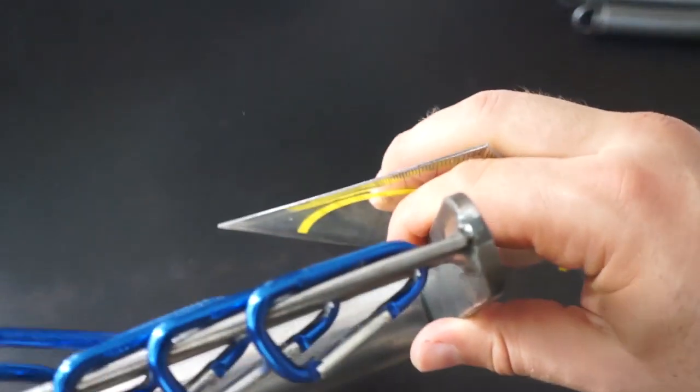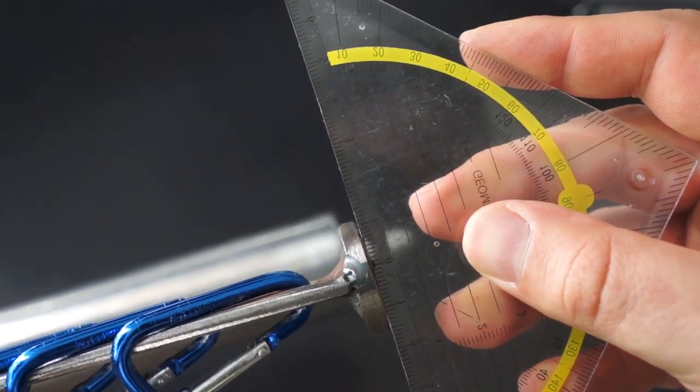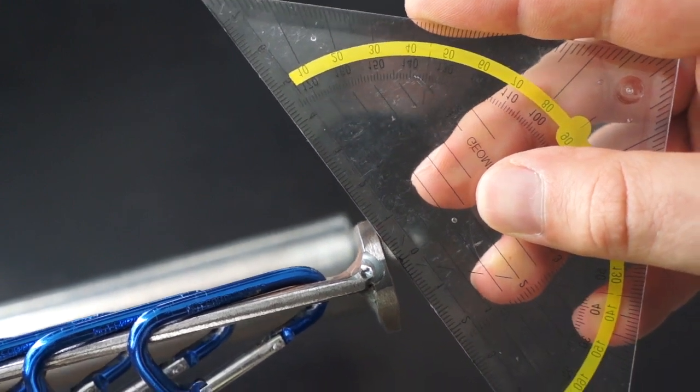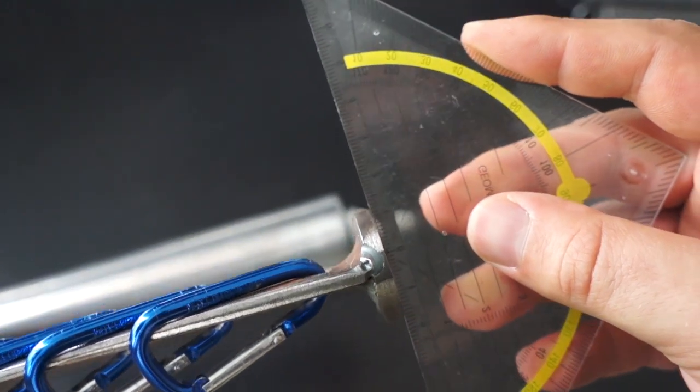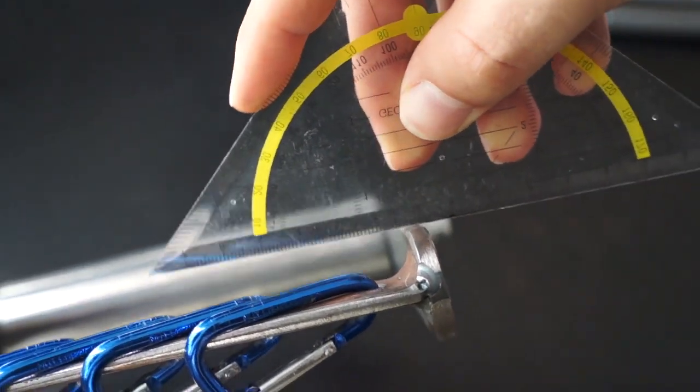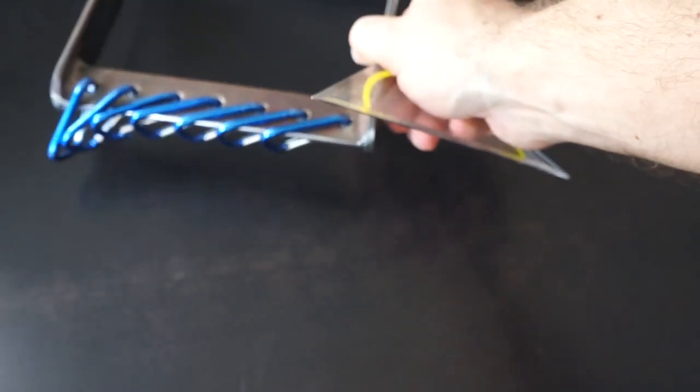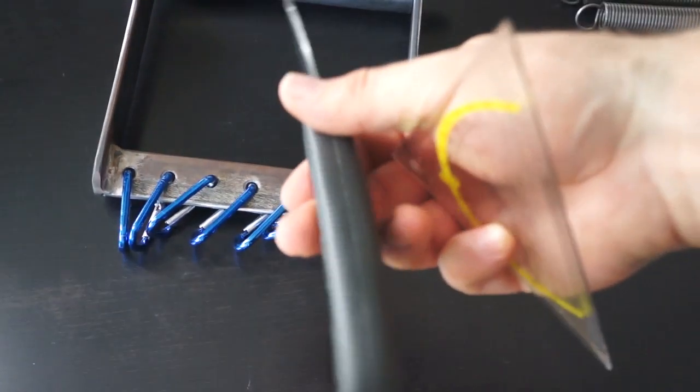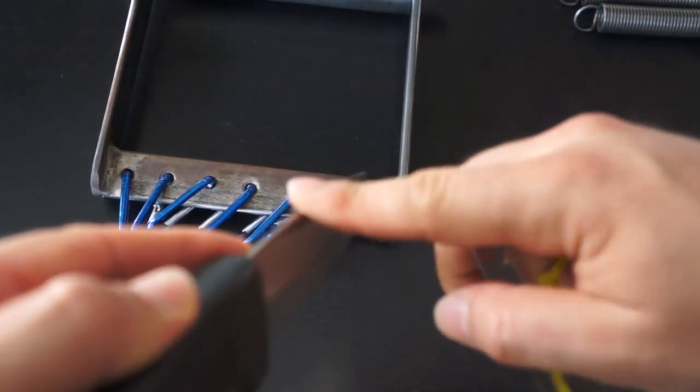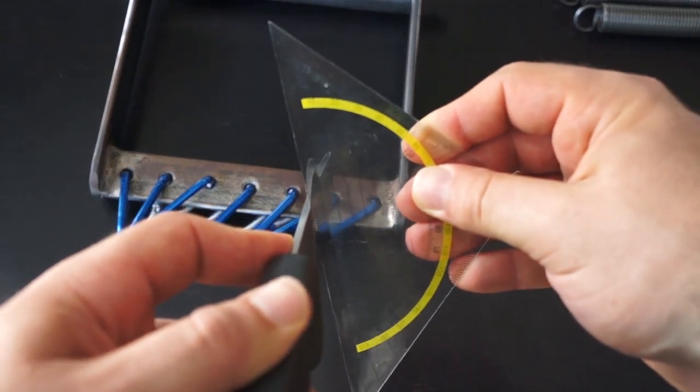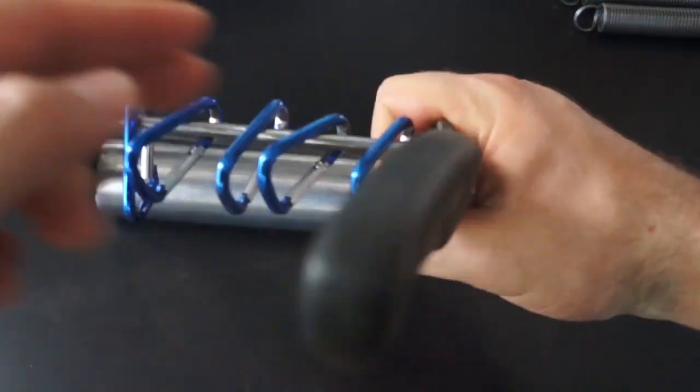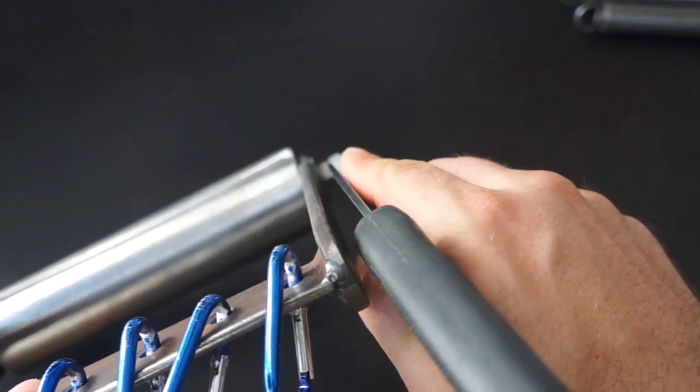If I take this triangle ruler and hold it against it, you see that the top edge goes further. That it's round here, so I can really run around the edge with the triangle ruler without it catching, as it would with a right angle like I have on this knife back. This knife back clearly has a right angle up here, meaning I can't quite run around it as easily. That's the difference to this expander.